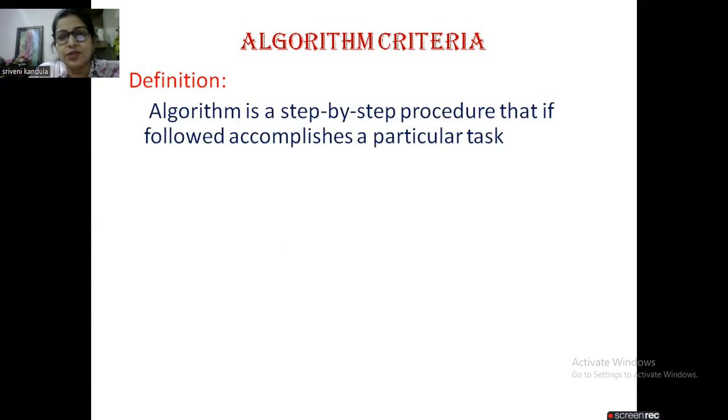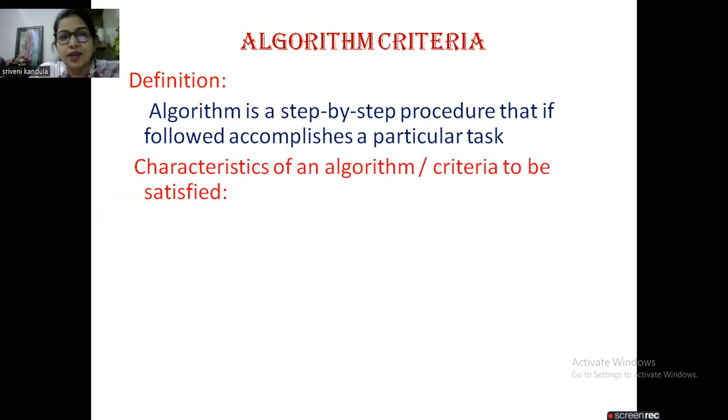Algorithm is a step-by-step procedure that, if followed, accomplishes a particular task. So here, I cannot call every step-by-step procedure for a particular task as an algorithm. Other than this, it has certain other criteria also to be satisfied. Let us see what it is. It has to basically satisfy five characteristics or five criteria.